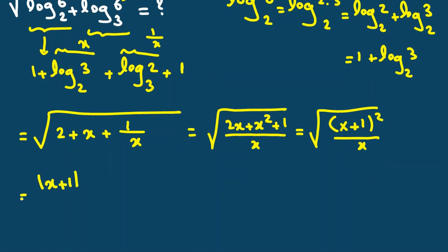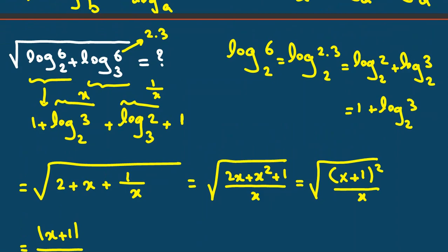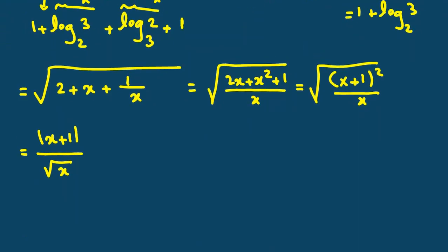And if we take X plus 1 squared outside, it will be absolute value of X plus 1 over root X. I want to say X is positive. Why? Because, look, I told you the diagram.